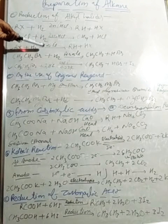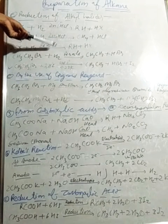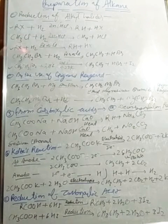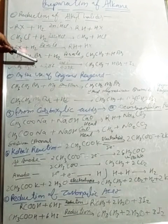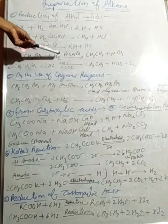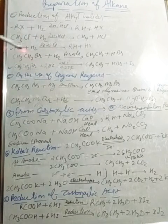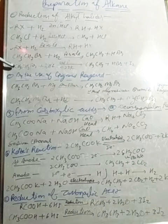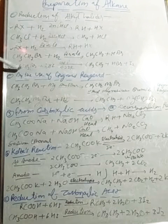Also, RX plus H₂, catalyzed by palladium or platinum, will also form alkane. For example, bromoethane reacts with hydrogen to form ethane plus hydrogen bromide.